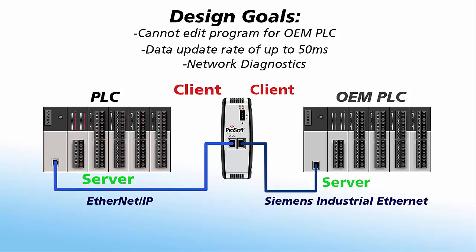However, because the gateway is initiating communications, the PLC will not have any indication in case of a communication failure. The gateway would be invisible to the PLC. So if anything goes wrong, like someone accidentally powering down the gateway, your client device will simply stop communicating. This could extend your downtime when trying to isolate the problem, especially if the problem happens five years from now when the person who programmed it is long gone. The solution that meets all the application requirements would be to set up I/O messaging between the EtherNet/IP PLC and our gateway. When PLCs do I/O messaging — sometimes called an I/O connection — they require a communication update interval to be set. This will ensure the communications between the PLC and gateway are fast and consistent, as they will be given priority over other communications.